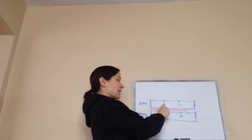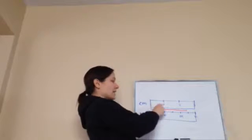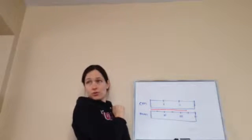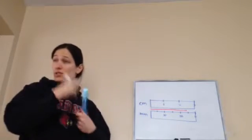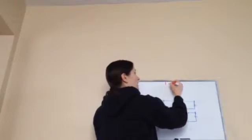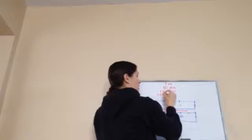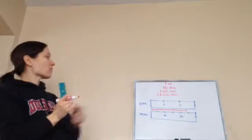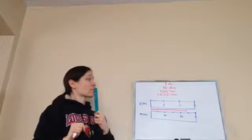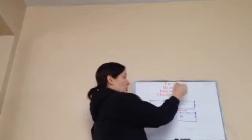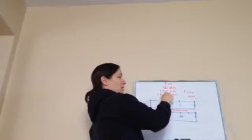One centimeter equals how many millimeters? Ten. Two centimeters equals how many millimeters? Twenty. Now remember the rule from last lesson: one meter is the same thing as 10 decimeters, which is the same thing as 100 centimeters, which is the same thing as 1,000 millimeters. Notice what's happening to the zeros — each time you move down, you're gaining one zero.